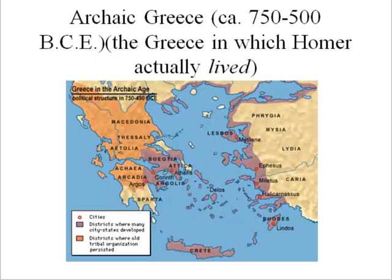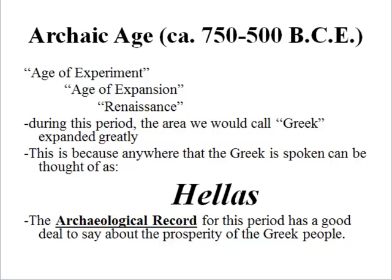Homer lived in the period after the Dark Age, in what we call the Archaic Age — the age that followed the Dark Age. The Archaic Age, from 750 to 500 BCE, is often thought of by scholars as the Age of Experiment, or the Age of Reason, or a kind of Greek Renaissance. It's during this period that the area we think of as Greek expanded greatly, because anywhere Greek was spoken could be thought of as Hellas — the Greek word for Greece.